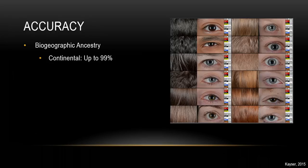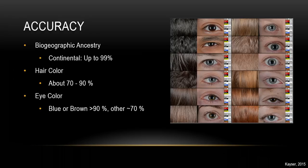Regarding accuracy: biogeographic ancestry at the continental level is about 99% accurate — you can determine whether someone is European, African, or Native American. However, results like '20% Spanish or 20% Turkish' don't work; that's too complicated. Hair color accuracy is between 70 and 90%. Eye color for blue or brown is over 90% accurate; intermediate forms are about 70%. Skin color is correct in about 80 to 90% of cases.